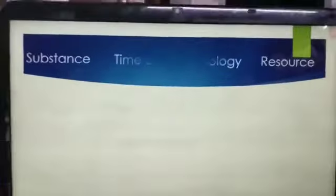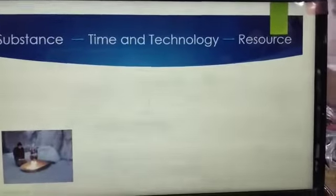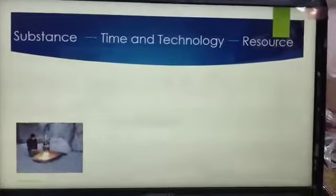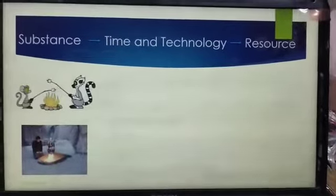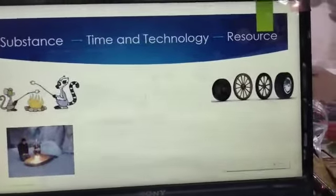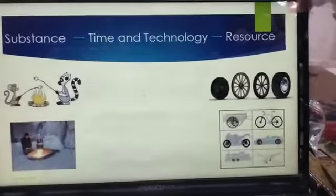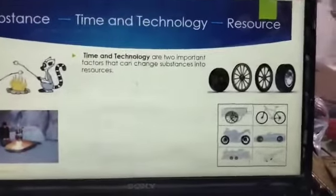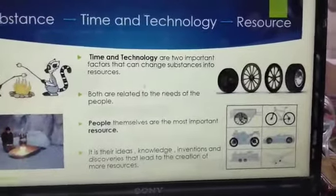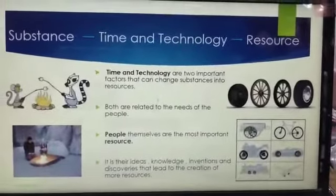Another driving factor is time and technology, which can change any substance into a resource. Technology is the application of the latest knowledge and skill in doing or making things. Time is the time period taken to invent and use technology until a substance becomes a resource. For example, the discovery of fire led to the practice of cooking, and the invention of the wheel resulted in transportation. Time and technology are two important factors that can change a substance into a resource.